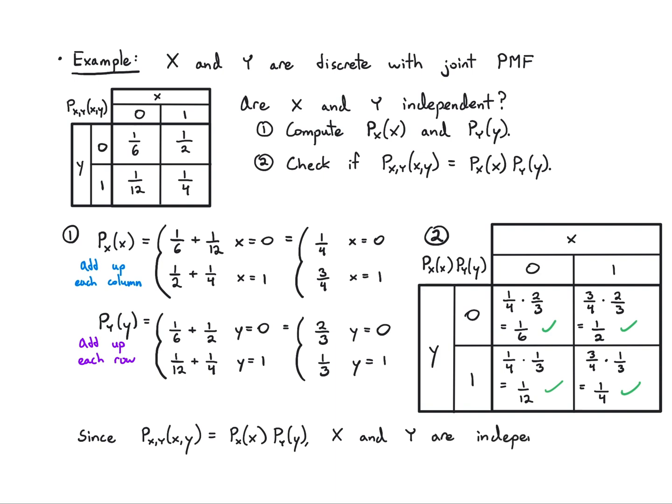Independence means I can't predict X any better with or without knowing Y — it doesn't matter whether I know Y. It's hard to see this just by staring at the table. One trick: you can see that each column is a multiple of the other column, or each row is a multiple of the other row. That's a clue. We'll see other tricks for determining this.